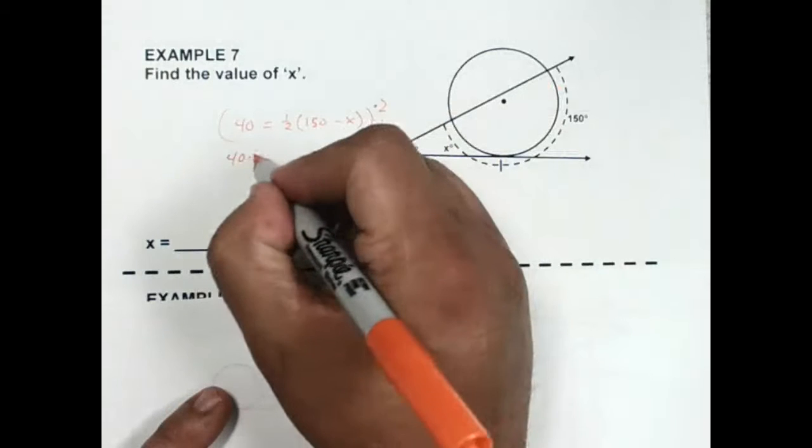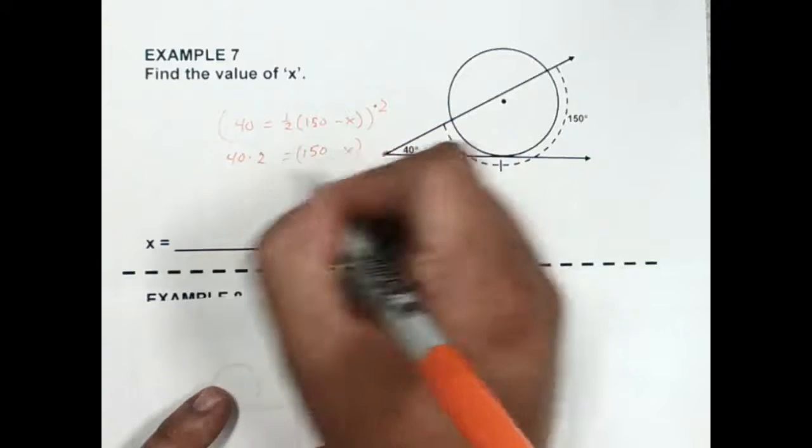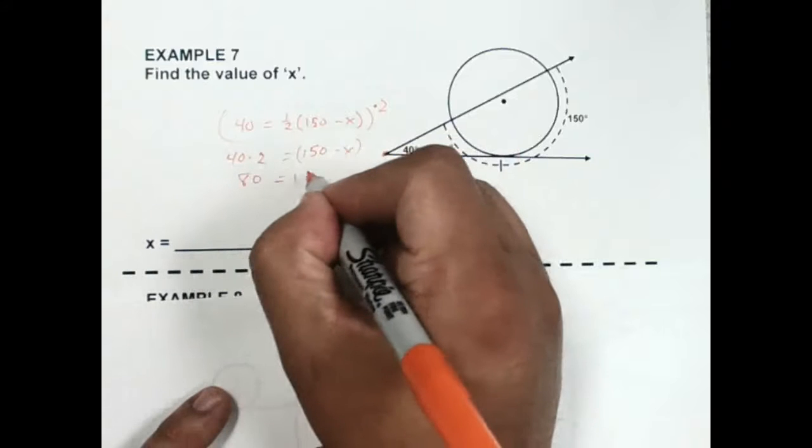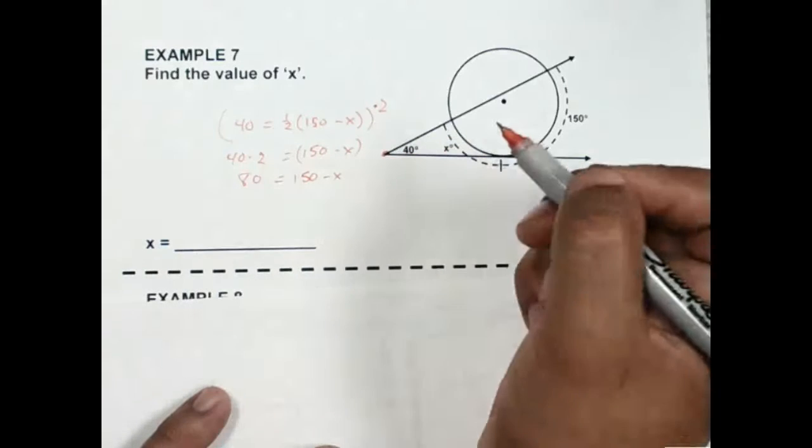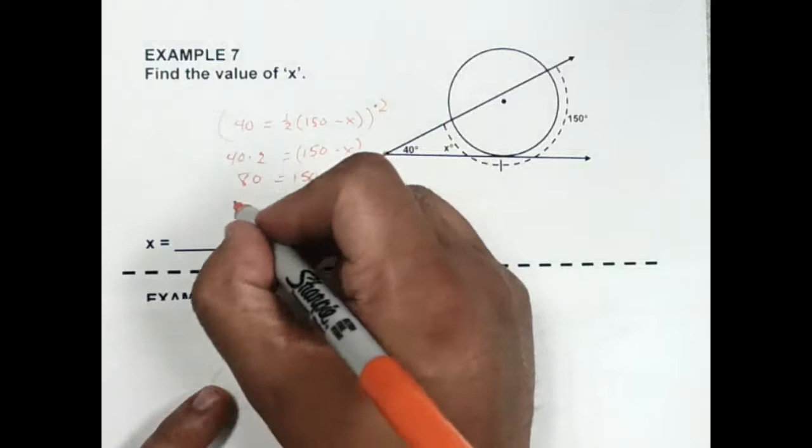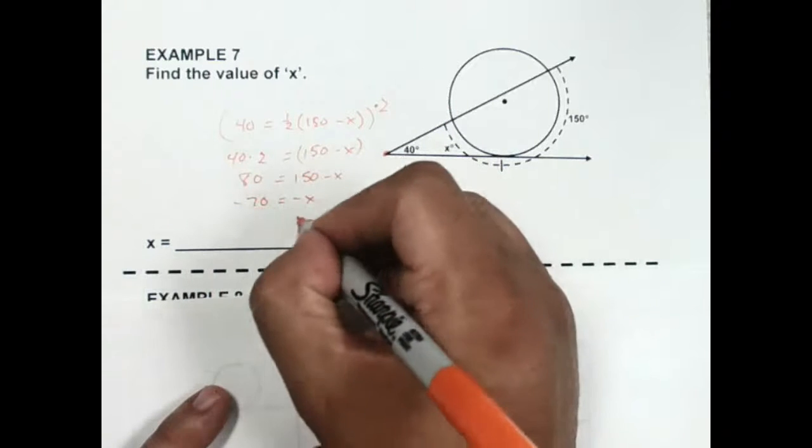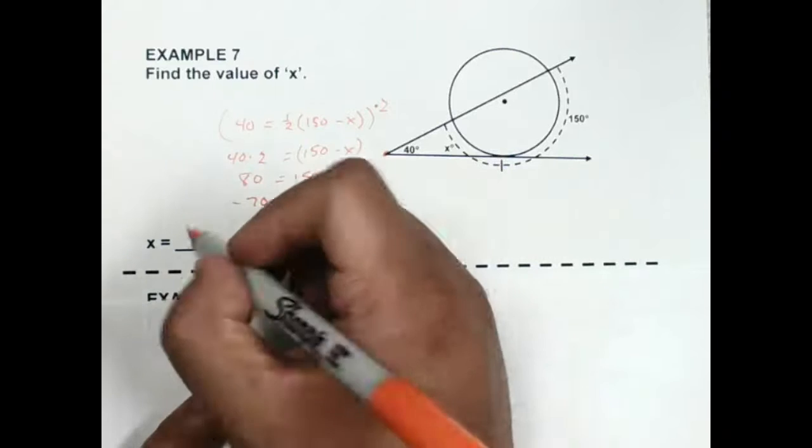So 40 times two is equal to 150 minus x. This becomes 80 is equal to 150 minus x. If I subtract the 150 from both sides, I get negative 70 is equal to negative x. Divide by negative 1, we get that x is 70.